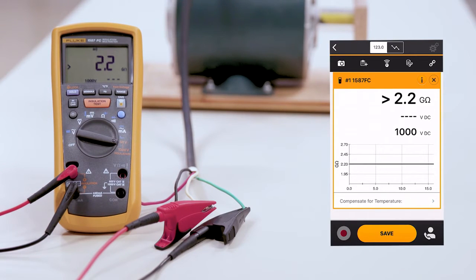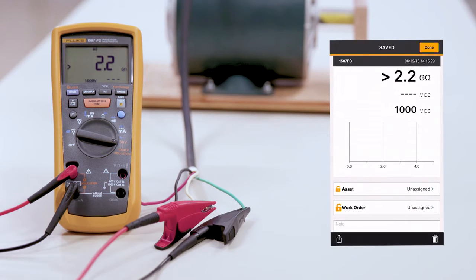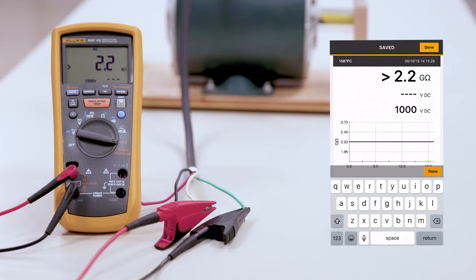We're going to save the last test and identify it in our notes as the white leg. By hitting Done, we're done.